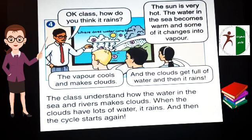The last one. The class understand how the water in the sea and rivers makes clouds. When the clouds have lots of water, it rains. And then the cycle starts again. الطلاب فهموا كيف المياه بتيجي. Okay class, how do you think it rains? The sun is very hot. The water in the sea becomes warm and some of it changes into vapor. الشمس حارة جداً. The vapor cools and makes clouds. And the clouds get full of water and then it rains.